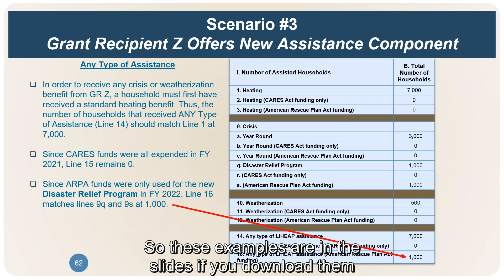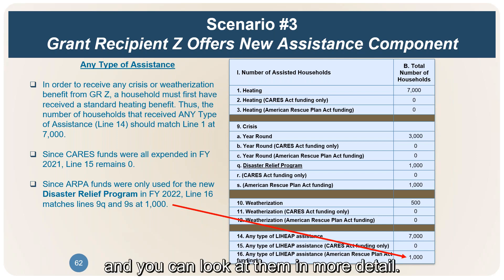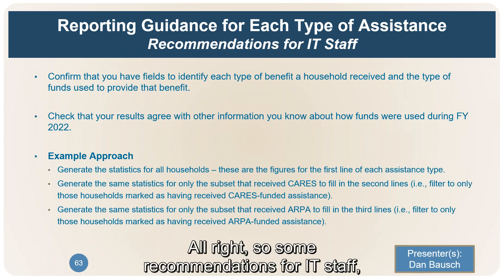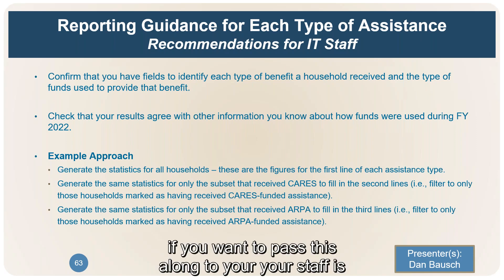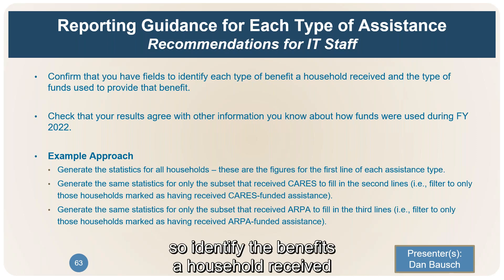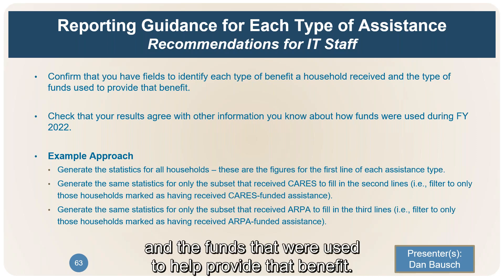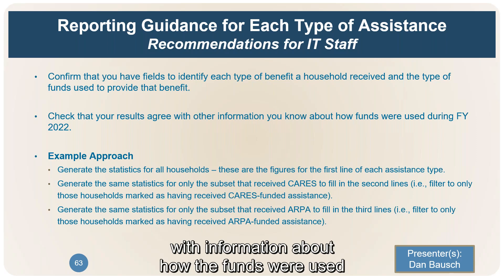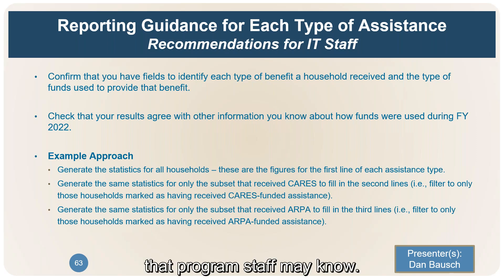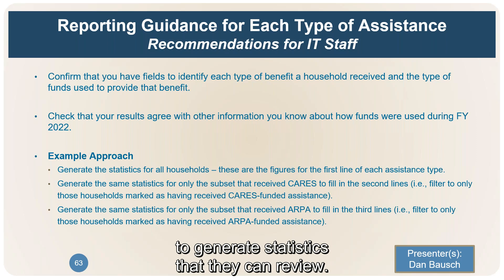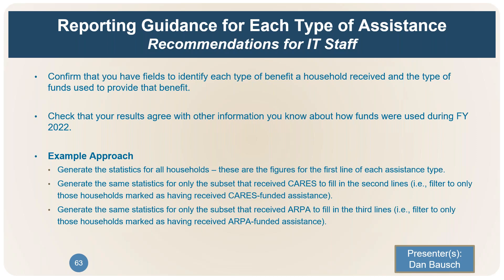These examples are in the downloadable slides for more detail. For IT staff: make sure you have the right fields to identify the benefits a household received and the funds used to provide that benefit. Ensure your reports agree with information program staff know about how funds were used. An example approach to generate the needed statistics is provided in the slides for your IT staff to review.